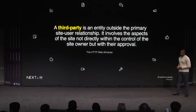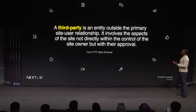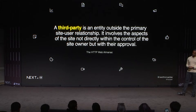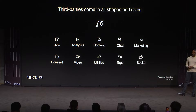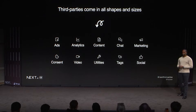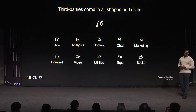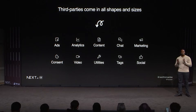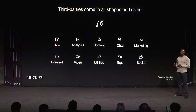So what's a third party resource? The HTTP Web Almanac defines a third party as an entity outside the primary site-user relationship — it involves aspects of the site not directly within the control of the site owner, but with their approval. Third parties come in all shapes and sizes: from ads, analytics, content embeds, chat widgets, marketing, and more. The third party ecosystem is a massive one that makes so many developers' lives easier by not having to reinvent so many common use cases.